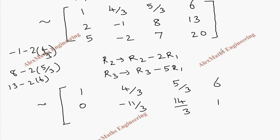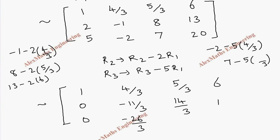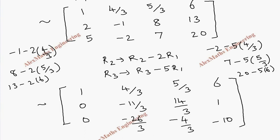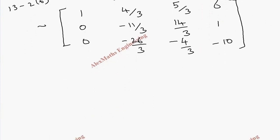Now for R3, we subtract 5 times R1: 5 minus 5×1 = 0, then -2 minus 5×(4/3) = -26/3, then 7 minus 5×(5/3) = -4/3, and 20 minus 5×6 = -10. So we have the new augmented matrix.